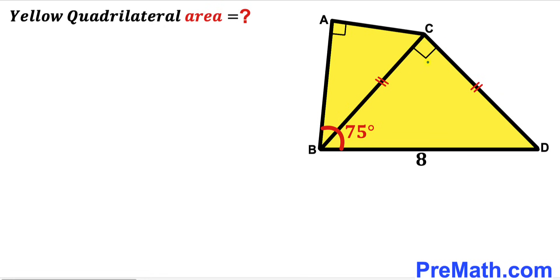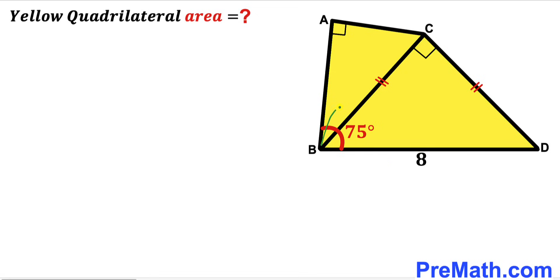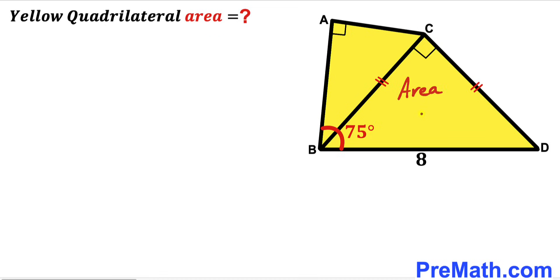Welcome to PreMath. In this video we have got quadrilateral ABCD that consists of two right triangles: triangle ABC and triangle BCD, such that angle ABD is 75 degrees and side BD has a length of 8 units. Moreover, side BC is equal to side CD, and our task is to calculate the area of the yellow quadrilateral ABCD.